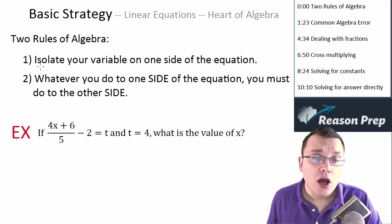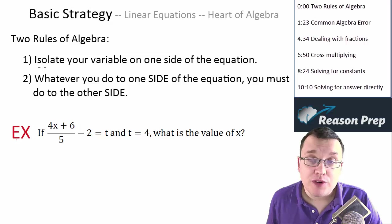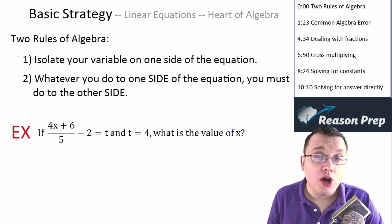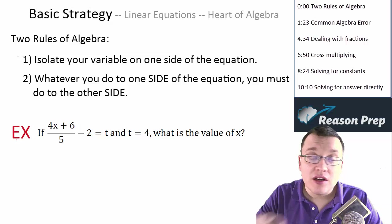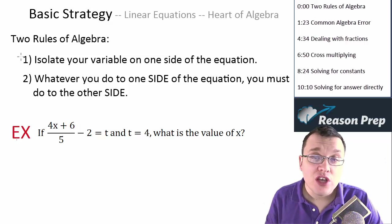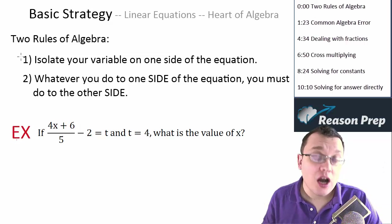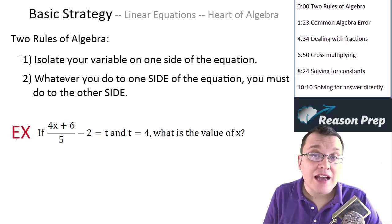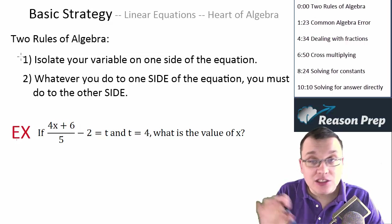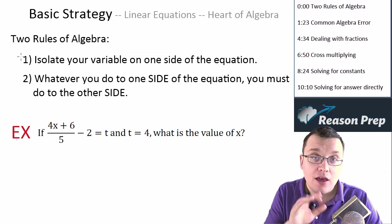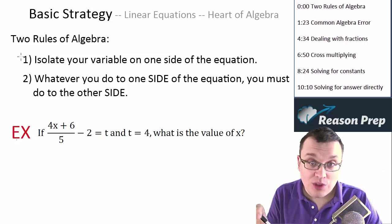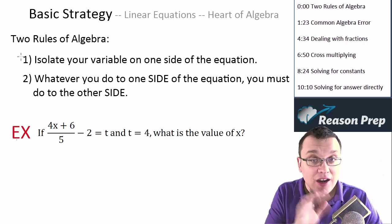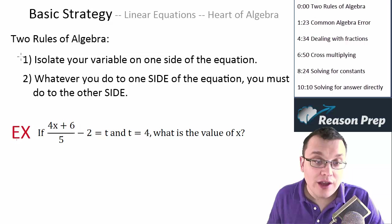The first rule is: the goal of algebra, really, is to isolate your variable on one side of the equation and have everything else — numbers, constants, perhaps other variables — on the other side. So if we're solving for x, we want to get x to one side and have everything else on the other. Often we'll have x on one side and a number on the other, because x is going to equal that number.